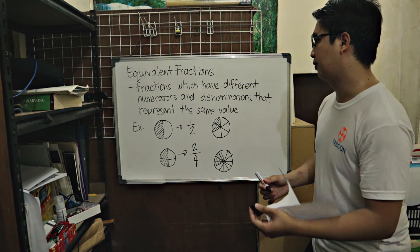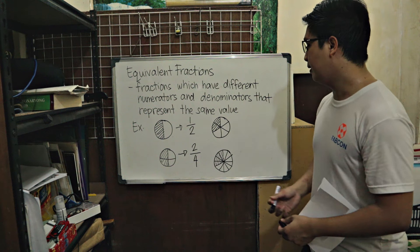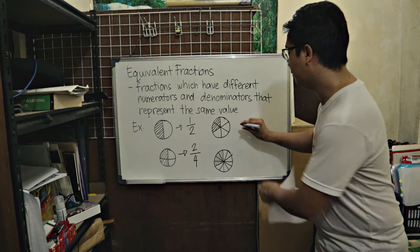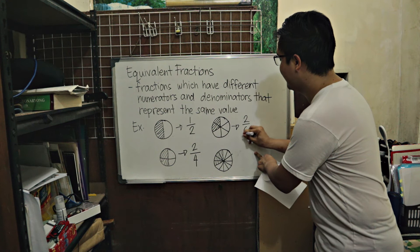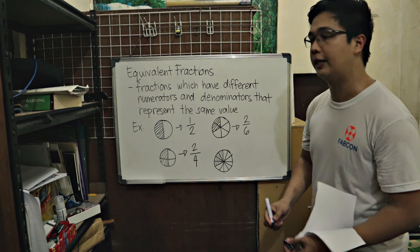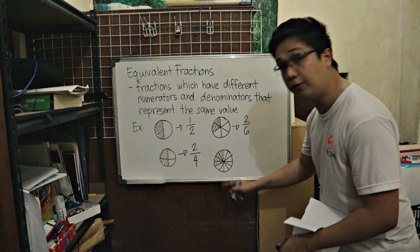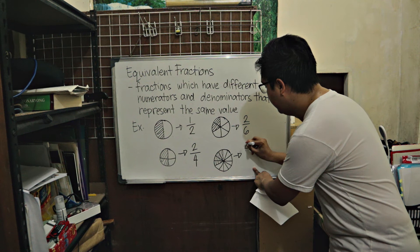Another example, we have 1, 2, 3, 4, 5, 6. We have 6 equal parts in total and 2 parts were taken. Meaning, this one, this fraction is 2 sixths. 2 parts taken out of 6 equal parts. This one naman, we have 1, 2, 3, 4, 5, 6, 7, 8, 9, 10, 11, 12 equal parts and 1, 2, 3, 4 parts are taken. Meaning, this one is 4 twelfths or 4 over 12.